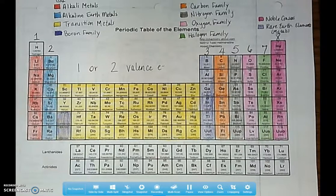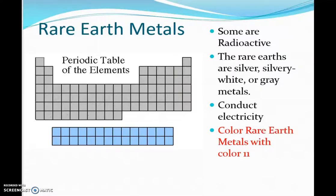The row below those are actinides, and many of these elements are not found in nature but can be made artificially in the laboratory. Since those have some different properties, they pull those down there and make some room up in those transition metals. But they are considered metals, and we can call them rare earth elements or rare earth metals. These rare earth metals, some of them are radioactive. They are silvery to silvery white or gray metals. They do conduct electricity.